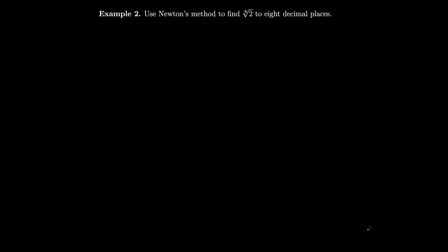For this example, we're going to try to find the sixth root of two to eight decimal places. So we need to find a function to use Newton's method on, and then we need to keep using Newton's method until we get two roots that match to eight decimal places.